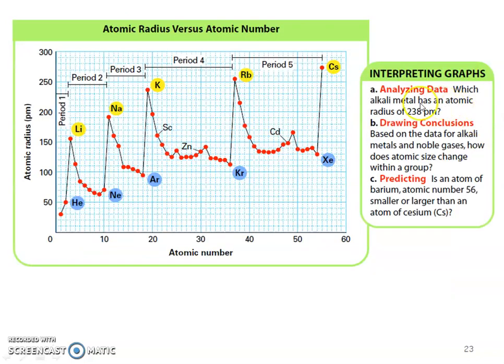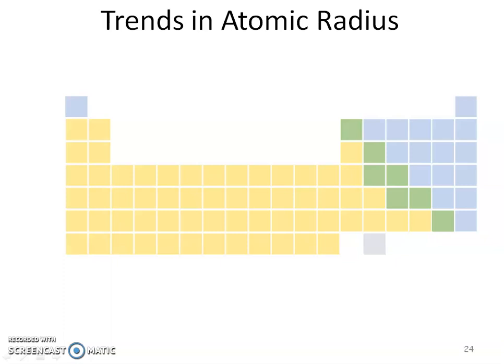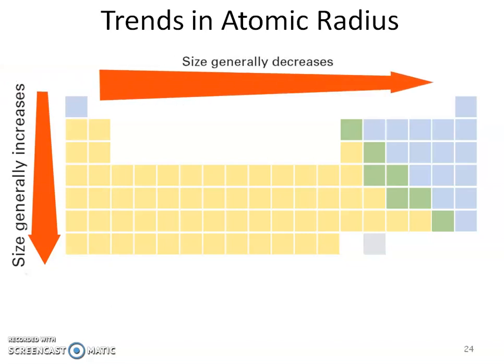So pause the video, read as you're looking again at that same graph, and answer those questions. Hopefully you paused and came up with those answers. So again, the trend of atomic radius going down a group is going to generally increase, and going across a period is going to decrease. Again, I like to show you more visual so it kind of gets into your brain better.